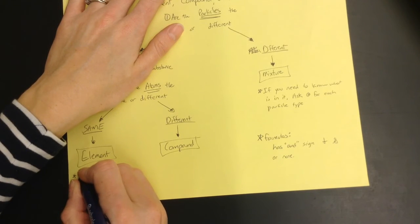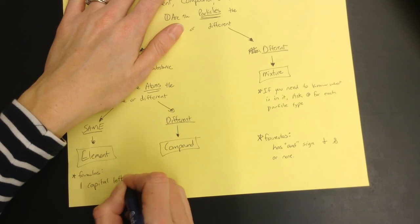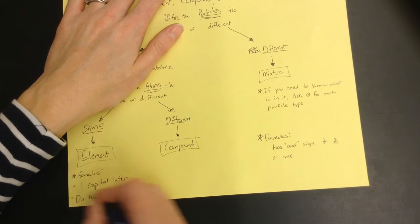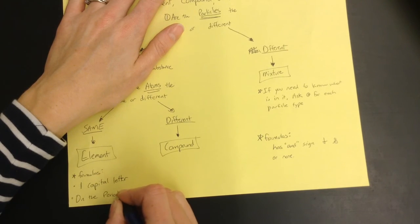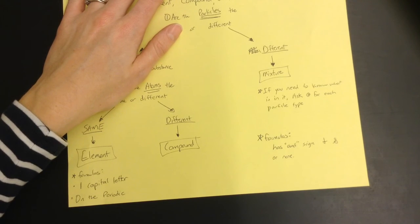there's only formulas with one capital letter. And it's always on the periodic table too, that's the other thing you'll know. If you can find it letter for letter on the periodic table, then it is an element.